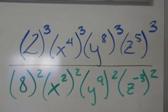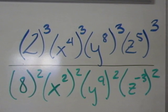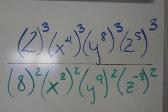So when I distribute the cube and the square, I'm really saying I want to take 2 cubed, x to the 4th cubed, y to the 8th cubed, z to the 5th cubed,